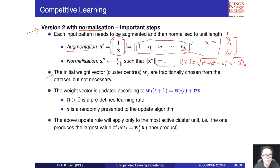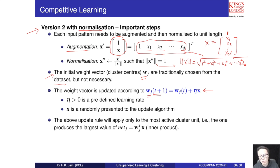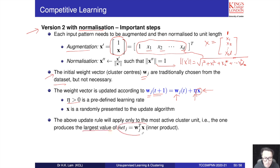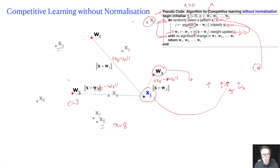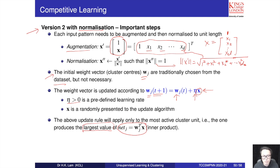We can initialize w by picking values from the dataset, such as x1 as w1 and x10 as w2. The update rule is: wj in the next iteration equals the current wj plus the learning weight times the picked sample. The winner j is determined by computing the inner product, picking the one giving the largest value, instead of using Euclidean distance.